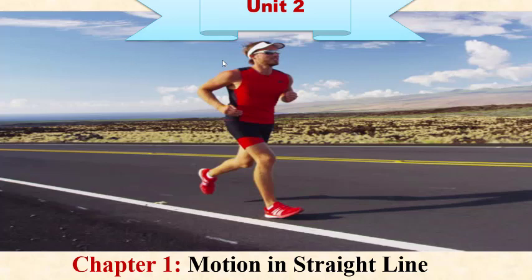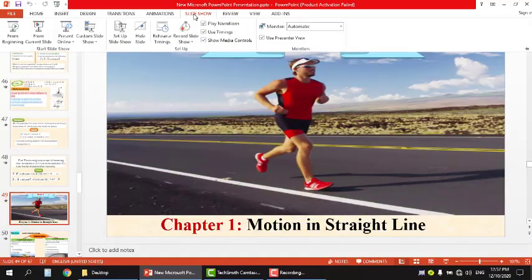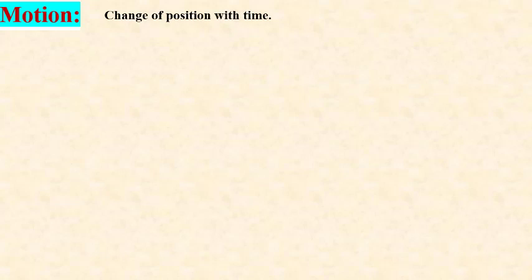Motion in a straight line. In this chapter, at first, we have to know what's meant by motion. Motion is a change of an object's location as time passes.